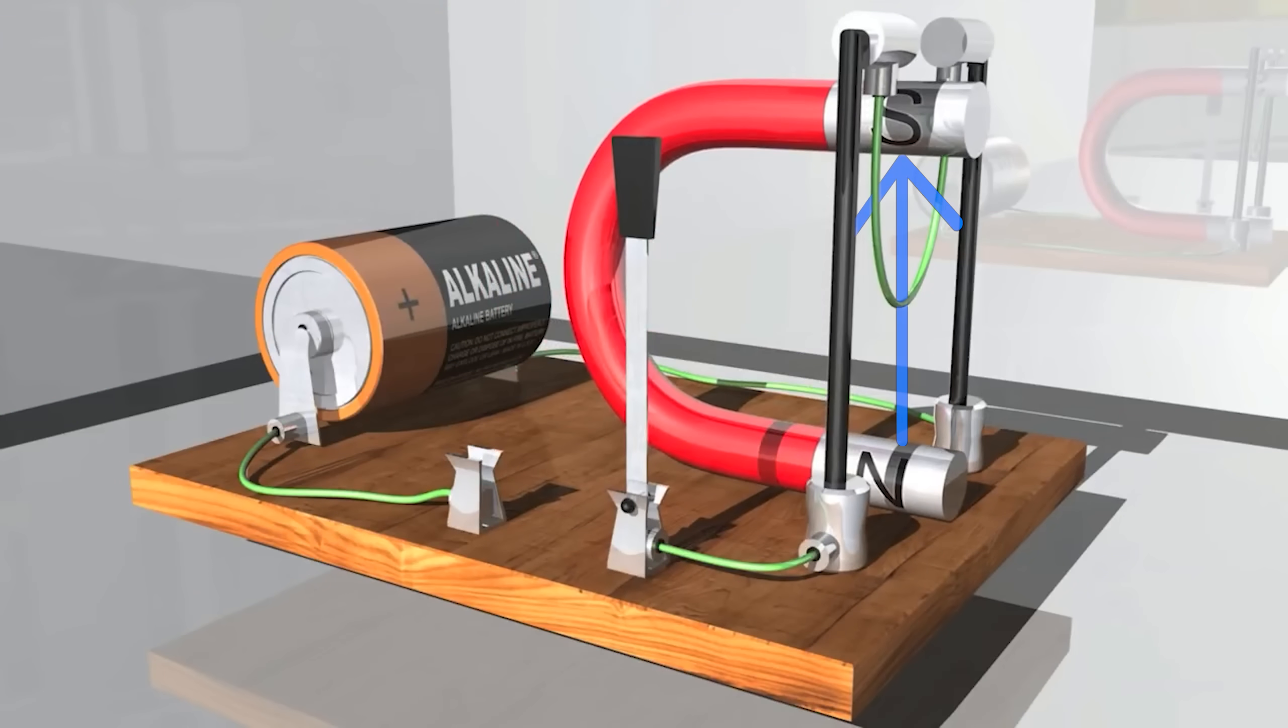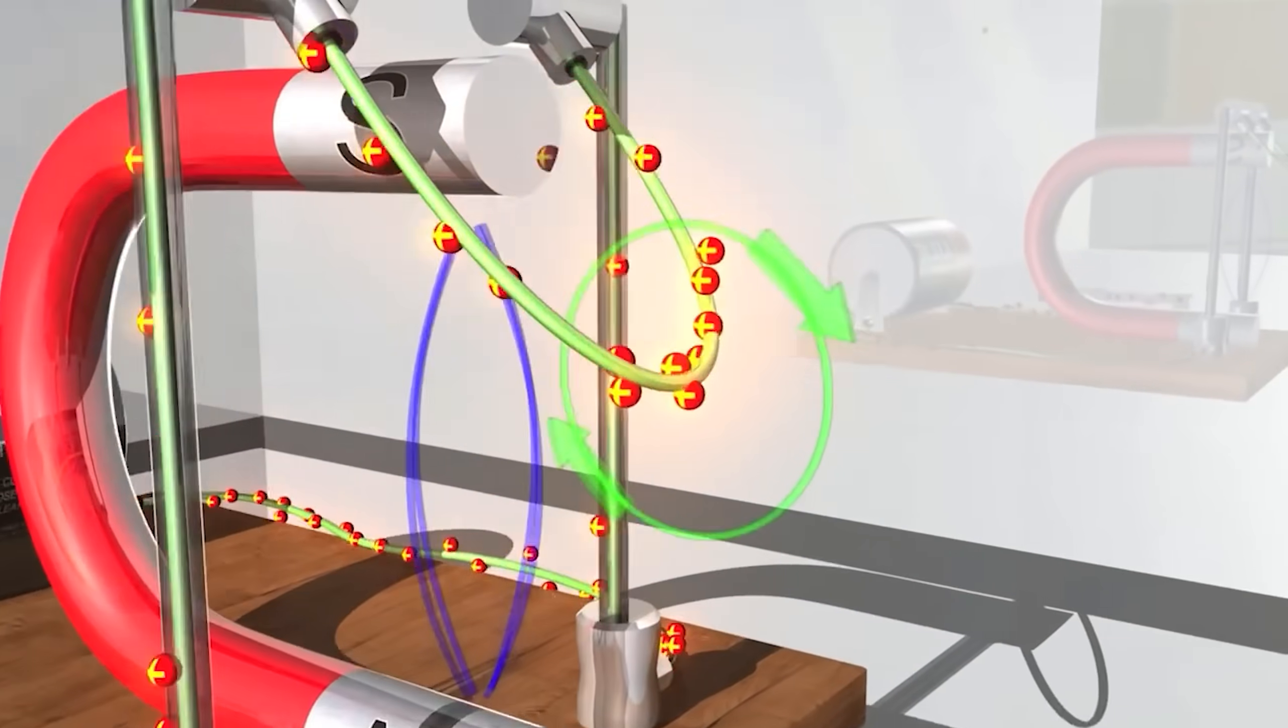So like I said, what happens? Well, a Lorentz force will be generated. Don't believe me? Take a look at this: the wire gets repelled and sent to the right, and the Lorentz force attempts to quote-unquote line up the magnetic field of both the wire and the magnet.